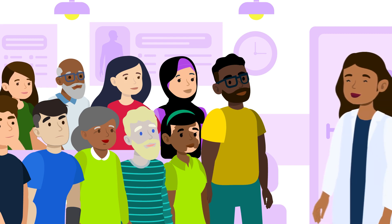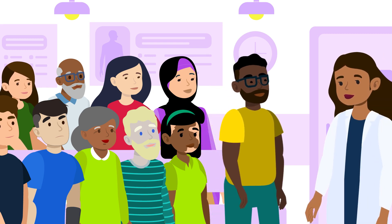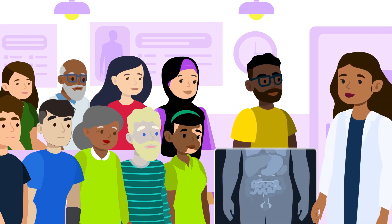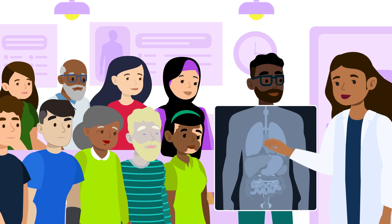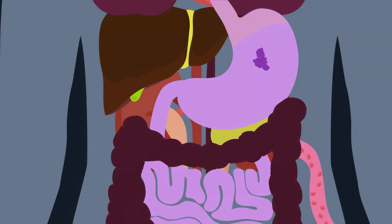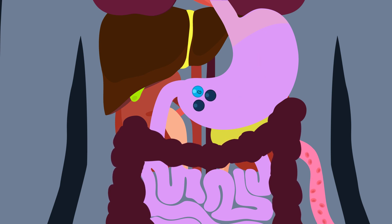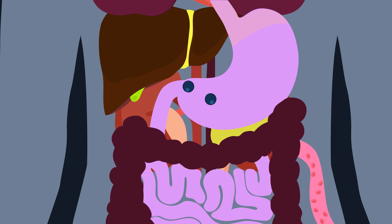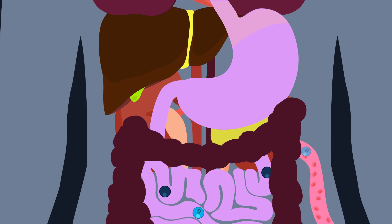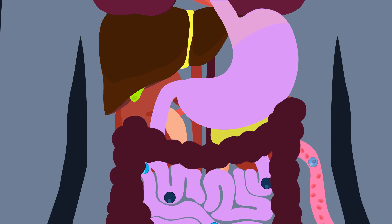Diabetes is a chronic health condition that affects one in ten people in the United States. In a person who doesn't have diabetes, the body converts the food they eat into a type of sugar called glucose and releases it into the bloodstream, causing blood sugar levels to rise.